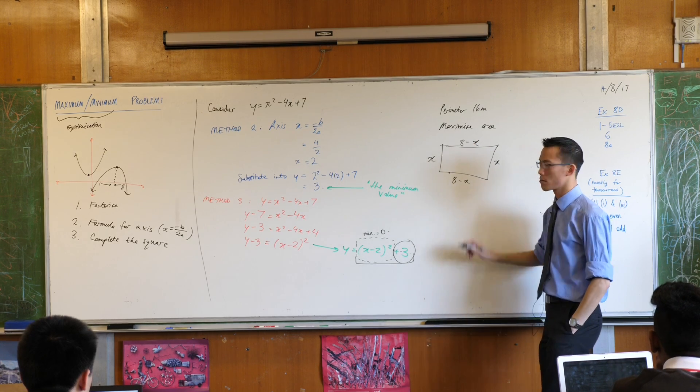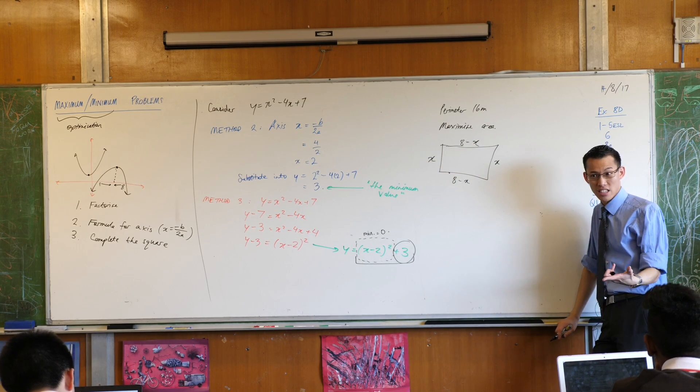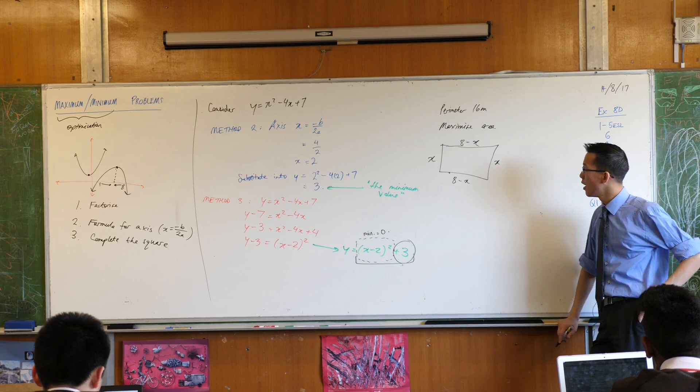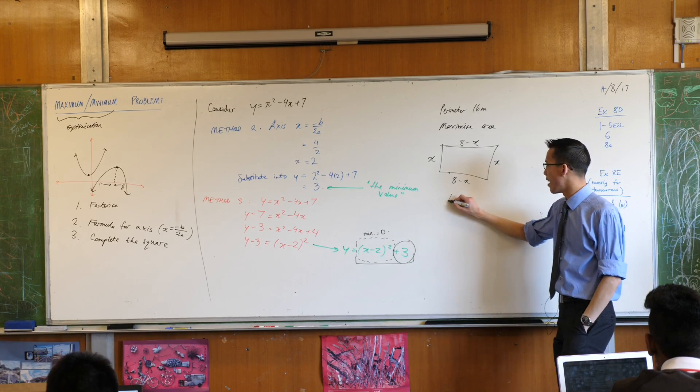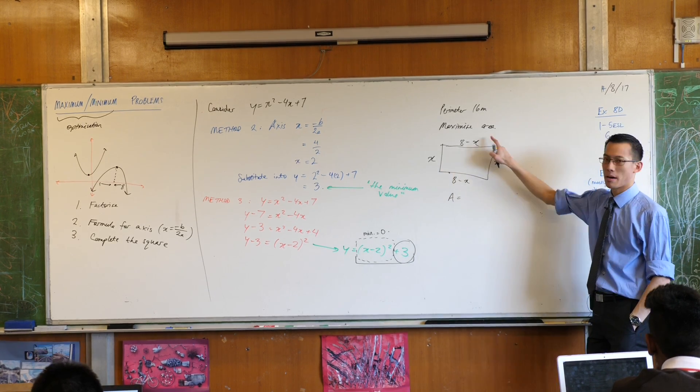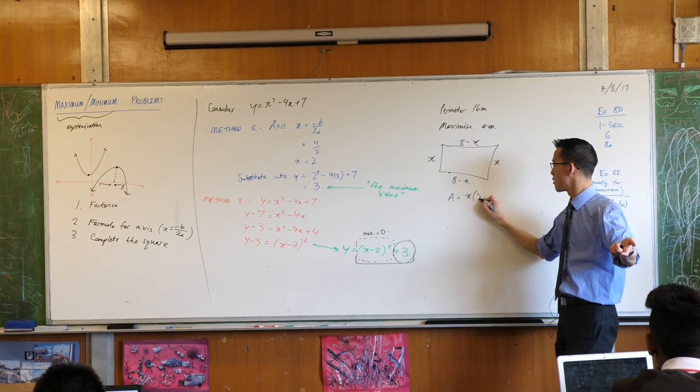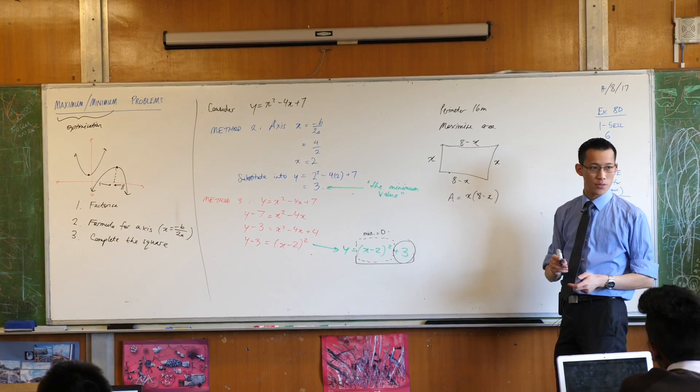Have I done it right? Because when you add them all up, do you get 16? Looks good, yeah? So now I can say my area equals this by this, and there's your quadratic.